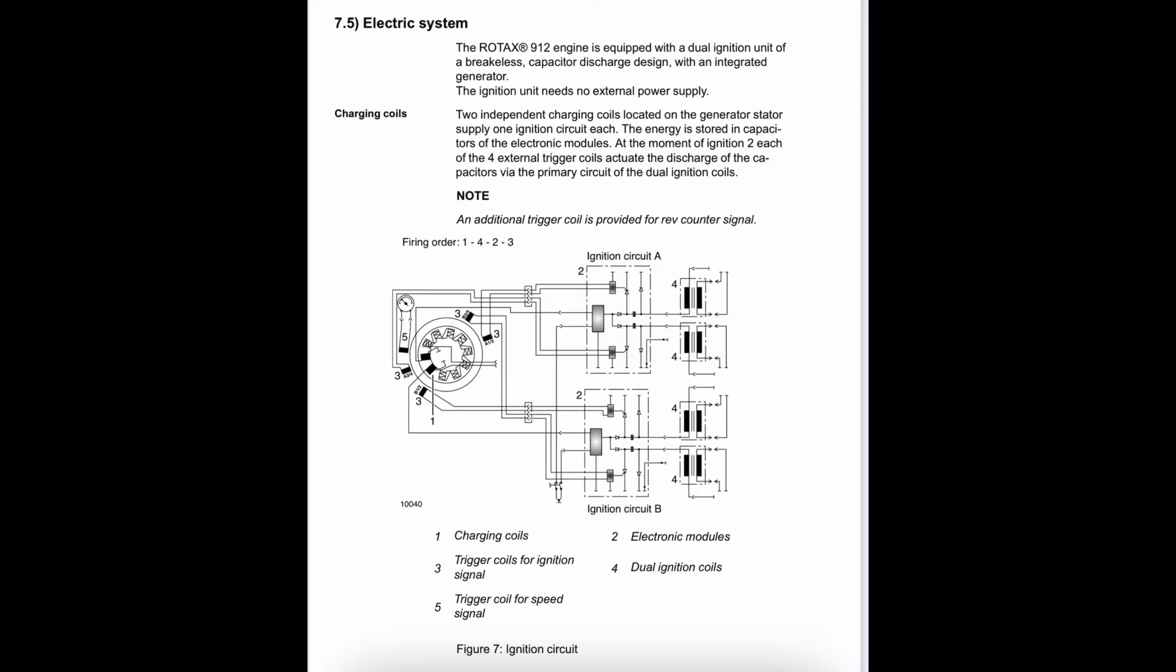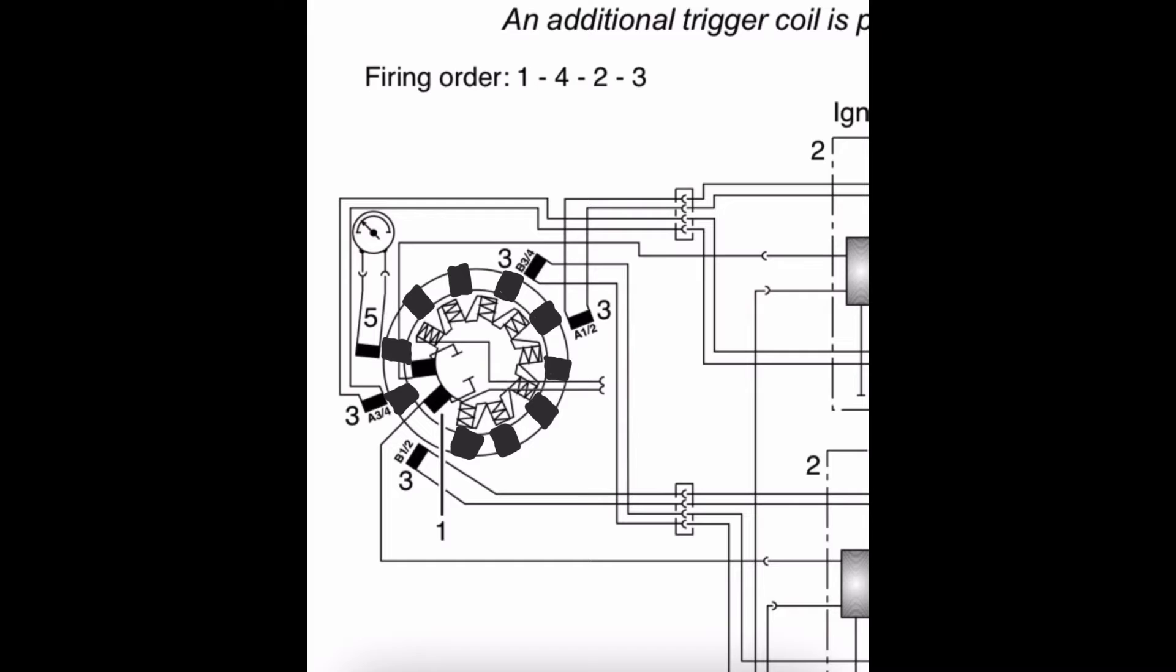Well, the first thing that we have is a 10-pole magnet. And this 10-pole magnet, consisting just like any other magnet, consists of north poles and south poles. And it'll spin around stationary stator wires, inducing an electromagnetic flux within these stator wires.